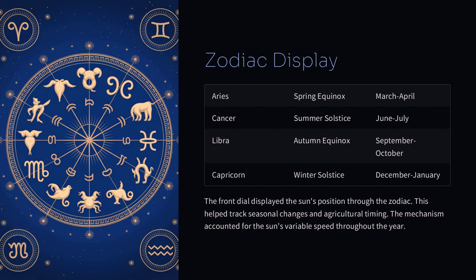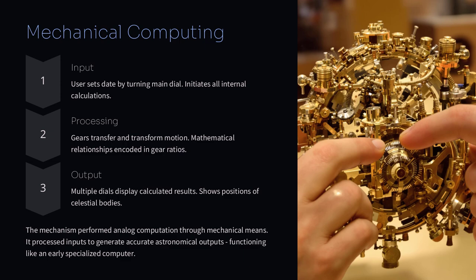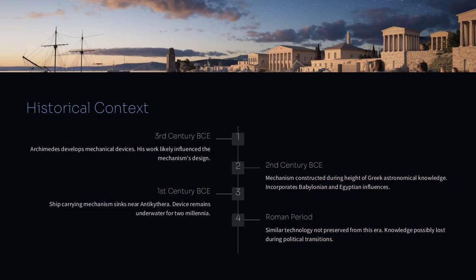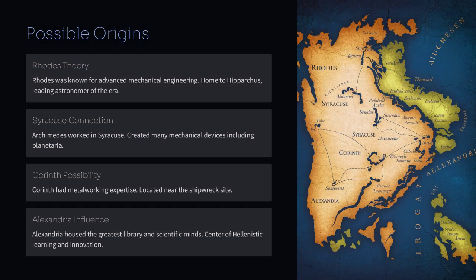Similarly, the Antikythera mechanism's gears were arranged in such a way that they could track the complex cycles of celestial bodies. This tells us that the ancient Greeks had a good grasp of both astronomy and mechanical engineering.